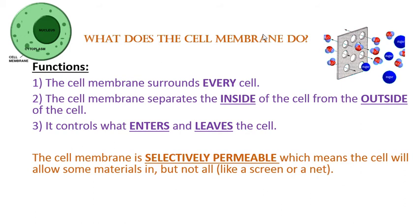Back to the cell membrane — function. It is part of every single cell. It separates the inside from the outside because it is a barrier, and since it is a barrier, it controls what enters or leaves. One of the big terms when it comes to the cell membrane is selectively permeable, which simply means some things can cross the cell membrane while other things can't.